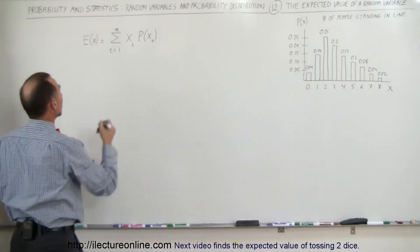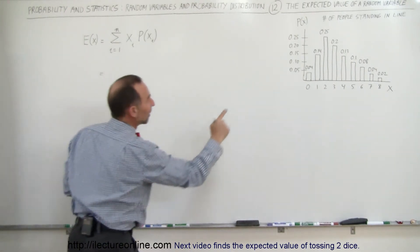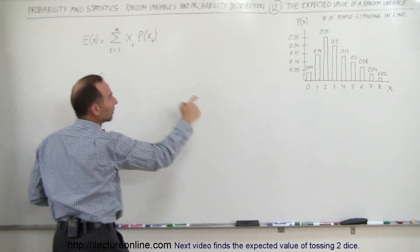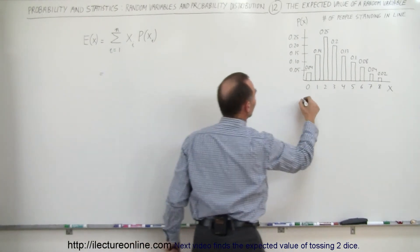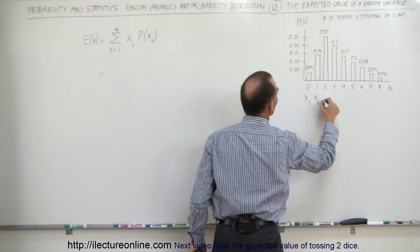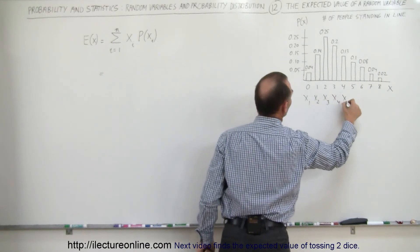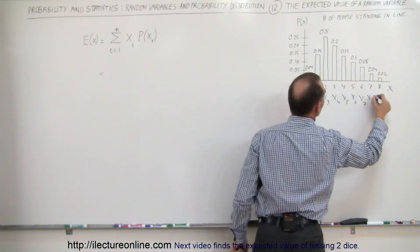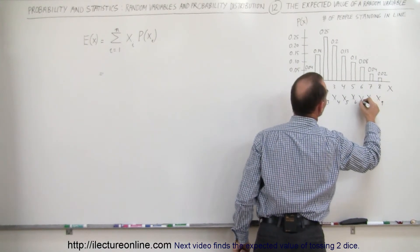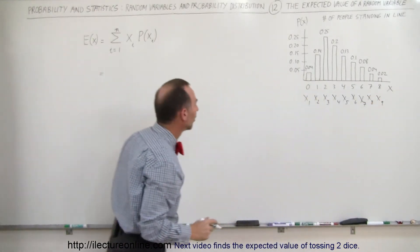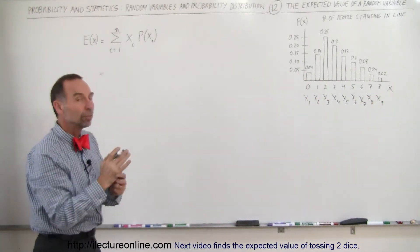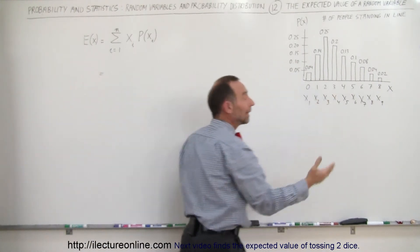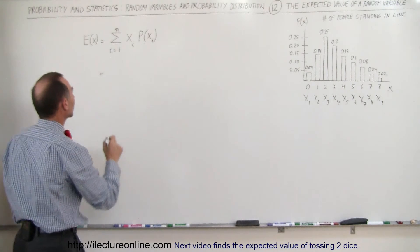Let's go ahead and show the example. How many numbers do we have? We have anywhere from zero to eight, so there are nine possible values for x: x₁ through x₉. We take each value and multiply it times the probability that that number will occur, then add it all up. That gives us the expected value.